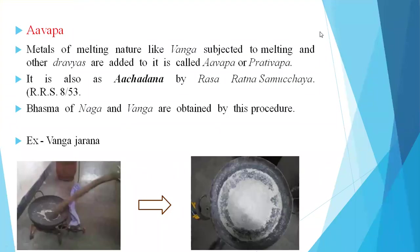In Paribhasa Prakarana, the second one is Avapa Samskara. Avapa or Avapana — the best example is Vanga Jara Navidi. The word meaning of Avapa is 'addition.' Adding herbal powders to a molten metal or mineral is named as Avapa, Prativapa, or even Achadana. Once the metal or mineral liquefies, some prescribed herbal powders are added to that molten metal.